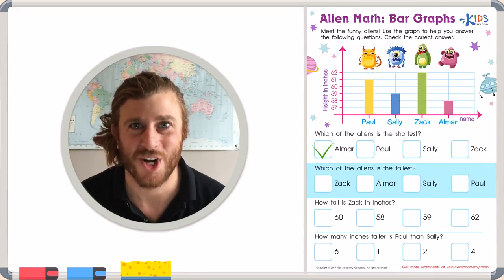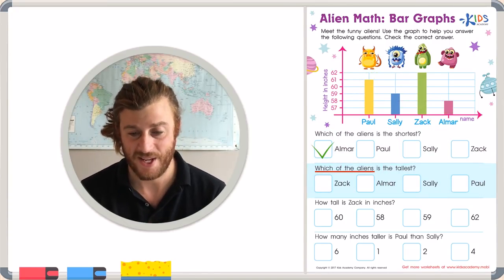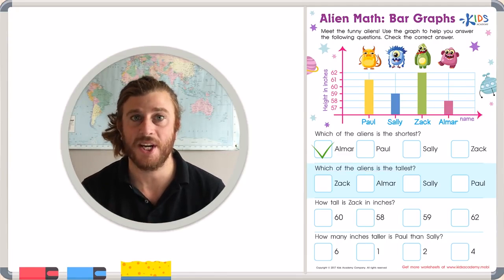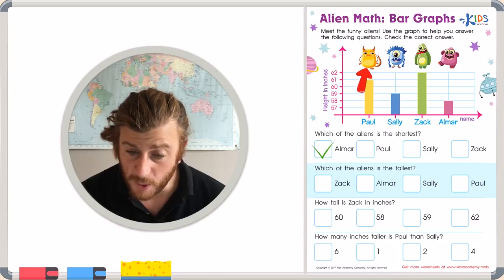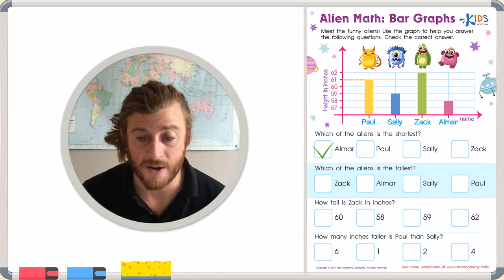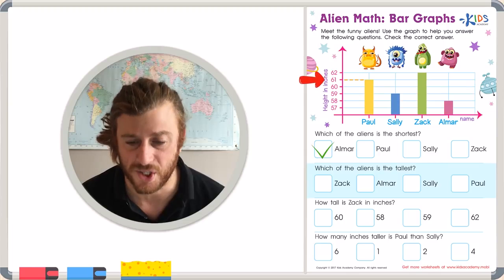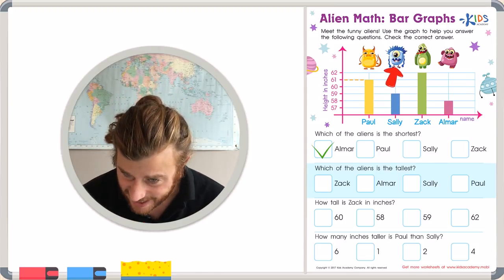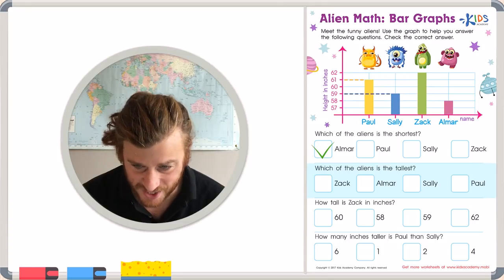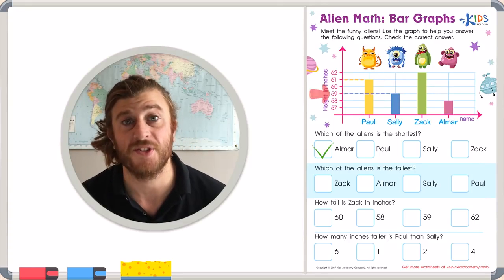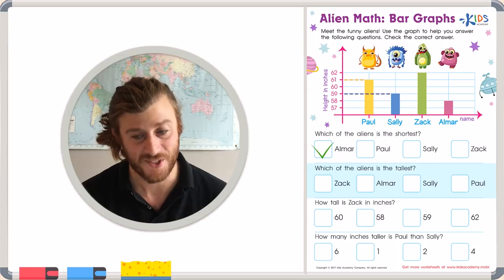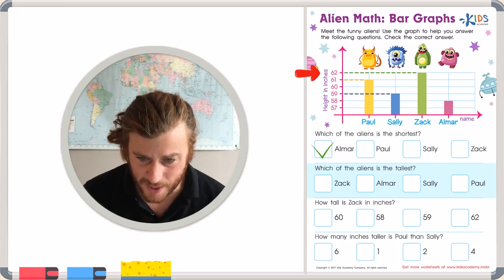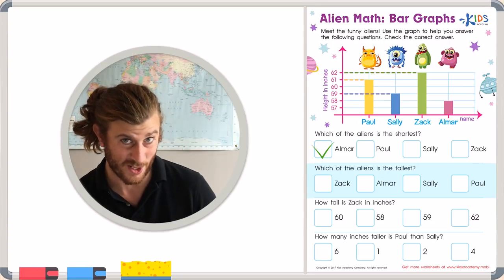Our next question asks, which of the aliens is the tallest? Well, let's use that same strategy again. If we look at Paul, we can remind ourselves that Paul is 61 inches tall. Maybe he is the tallest because Sally is only 59 inches tall, which means Paul is taller. But Zach is all the way at the top of the graph at 62 inches. Do you think Zach is the tallest?